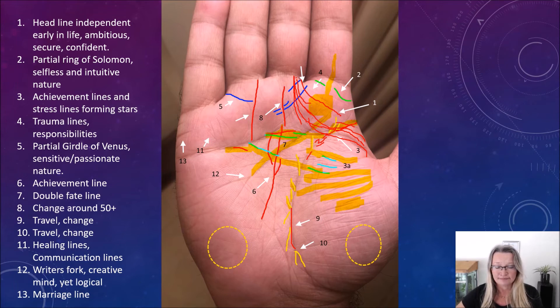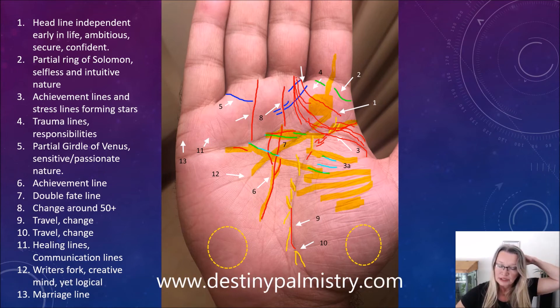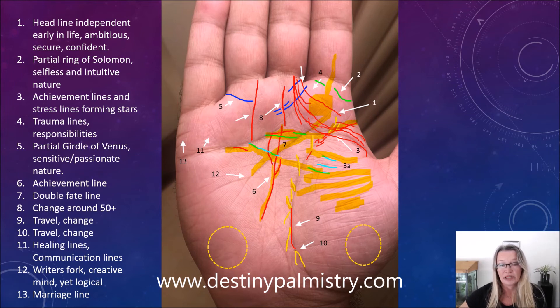Number six. Now we have in the red down here, we have the fate line that rises nicely towards the middle finger. And right about what age would I say, that is an achievement line. It's a branch that rises from the fate line. It's another achievement line. By the way, if you would like to read about it, I've just written an article about the achievement lines on my website, destinypalmistry.com. You can go there and read more about the achievement lines and what they mean on the other lines.